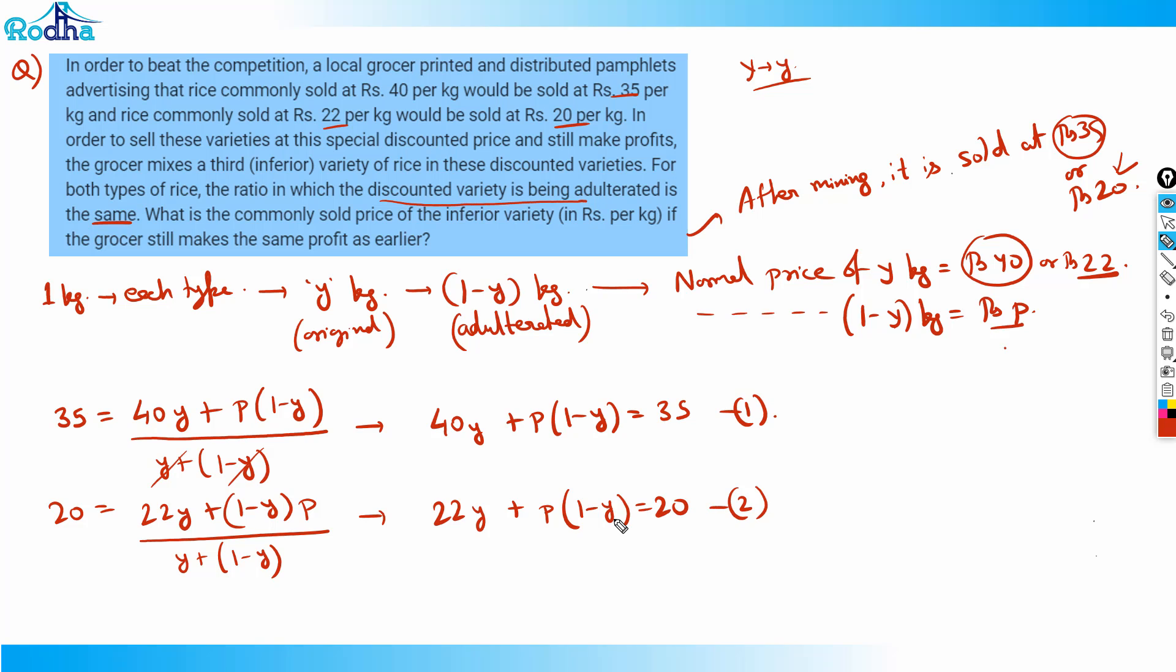This will get cancelled, so 18y will equal 15, therefore y will be equal to 5/6. Once y equals 5/6, I can put this in equation 1.